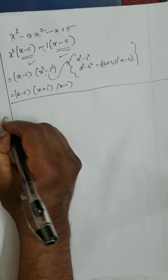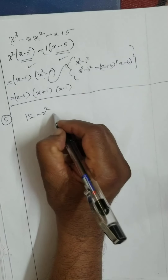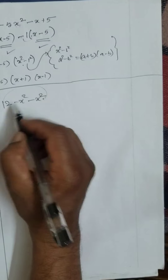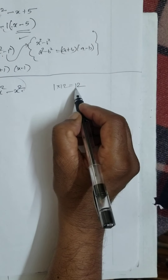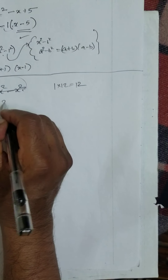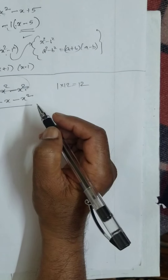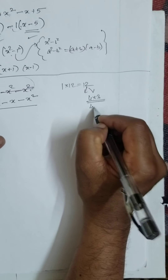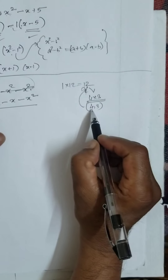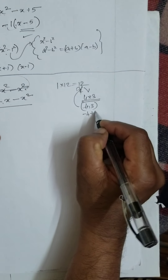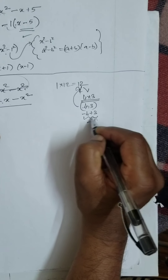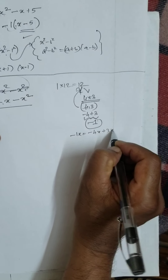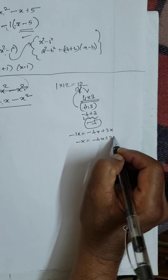Then next sum: 12 minus x minus x². See, 1 into 12 is 12. What are the factors of 12? 4 into 3 is 12 — so 4 and 3 are the factors. Out of 4 and 3, can I get minus 1? Yes: minus 4 plus 3 gives minus 1. So minus x can be written as minus 4x plus 3x.